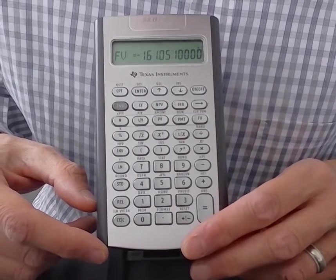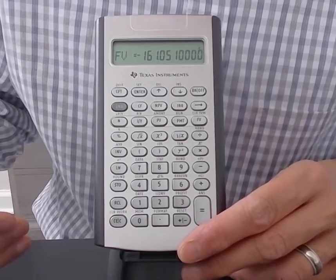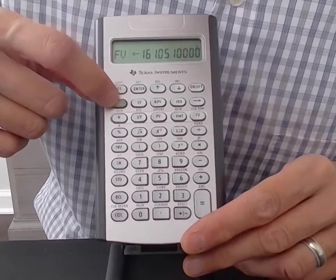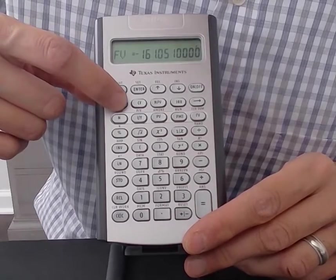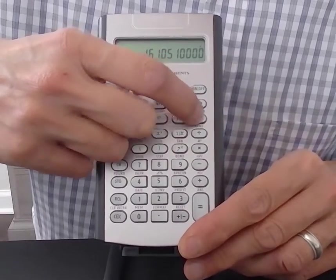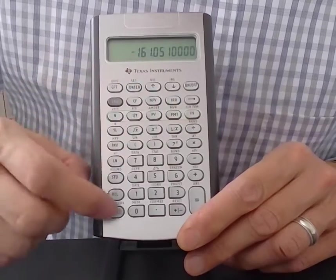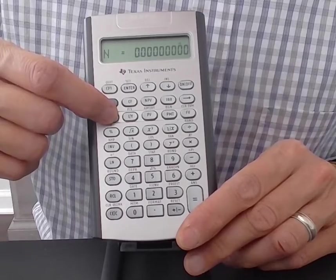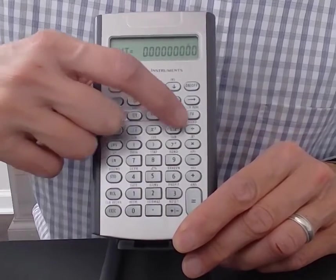And if you want to make sure that everything is cleared out when you do your next problem, you can press second and then clear TVM, which is above the FV button. Second, clear TVM. And then you see that as I press all the other buttons, nothing is stored in there.